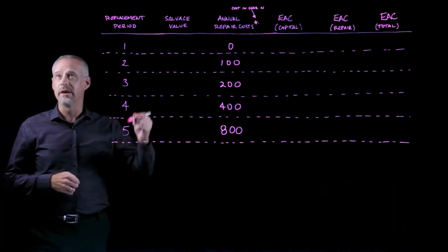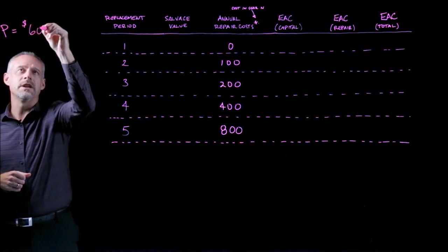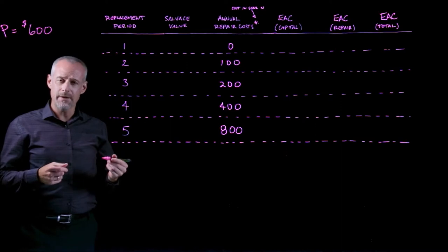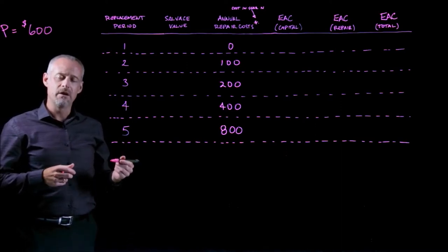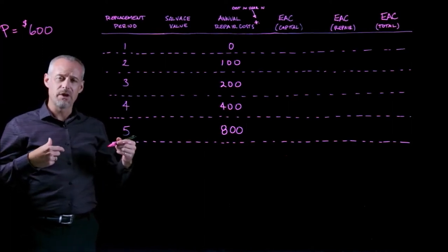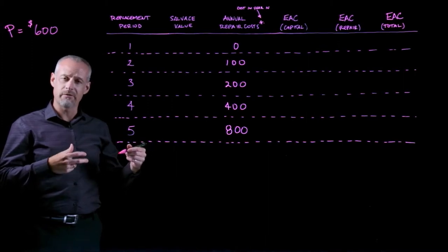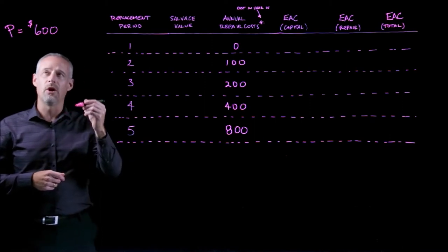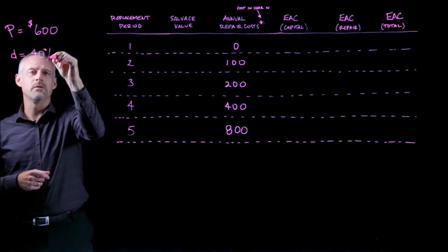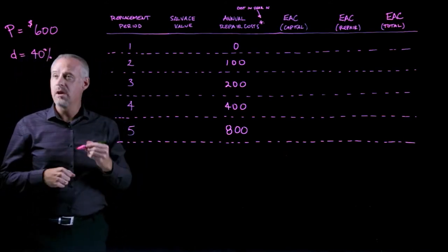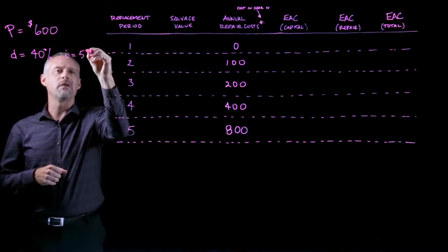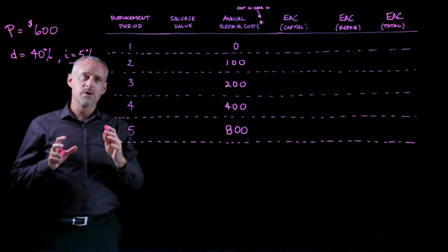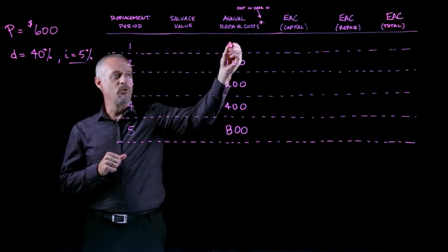Reading the problem carefully, we find that the purchase price of this lawnmower is $600, and we're assuming we'll purchase it new. We also need to estimate the salvage value at different points in time. To estimate salvage value, we'll use depreciation. We're told the lawnmower depreciates at a rate of 40% per year. We're also given an interest rate of 5%, which we'll use in our time value of money calculations.